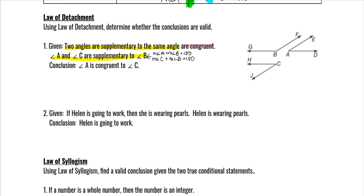Then it says A is congruent to C. We need to decide if this is true. It is a Law of Detachment — it went yellow, pink, yellow, pink, which is what it's supposed to do. Two angles supplementary to the same angle are congruent — that's a true statement — and A and C are supplementary to B, which we wrote out math to confirm.